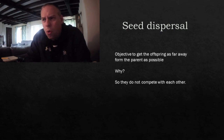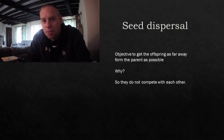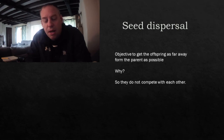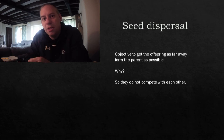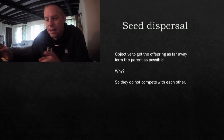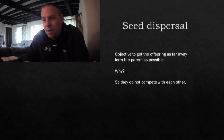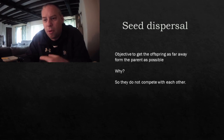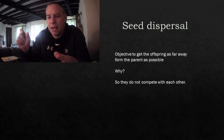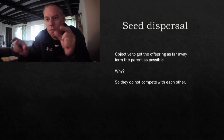Why do we want seeds to go as far away from the parent as possible? Because you don't want the offspring — the young plant — to be in competition for resources with the parent plant. You want it far enough away that they're not competing against each other. There are various different ways to achieve this, and seed dispersal vectors should not be confused with pollination vectors — they are two very different things.